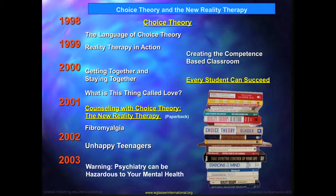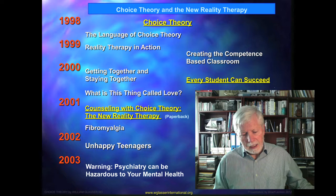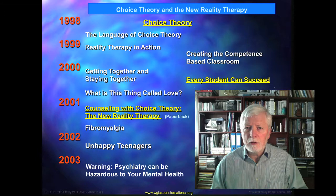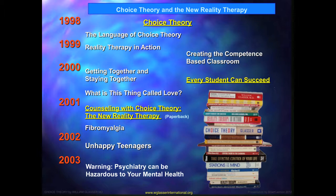He published many books rewriting his ideas in the language of Choice Theory: Reality Therapy and Action, Creating the Competence-Based Classroom, Getting Together and Staying Together, Every Student Can Succeed, What Is This Thing Called Love, Counselling with Choice Theory and New Reality Therapy, and books about fibromyalgia and unhappy teenagers. His last book, written entirely by himself, was Warning: Psychiatry Can Be Hazardous to Your Mental Health — a challenge to the psychiatric practice of using medication instead of psychology.